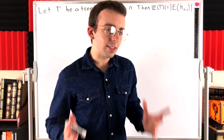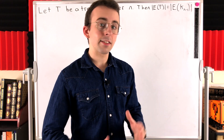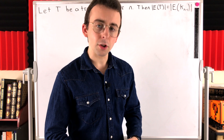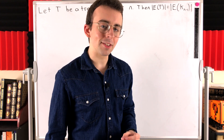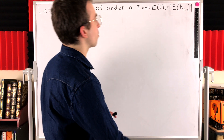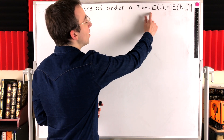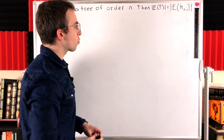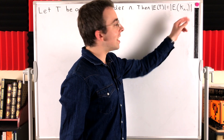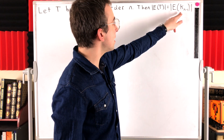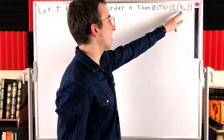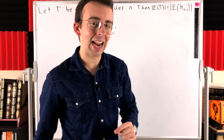Howdy folks! What is the size — that's the number of edges — of the complement of a tree graph on n vertices? Turns out the answer is actually kind of interesting. The size of the complement of a tree graph on n vertices is actually equal to the size of a complete graph with one fewer vertices — that's K(n-1).